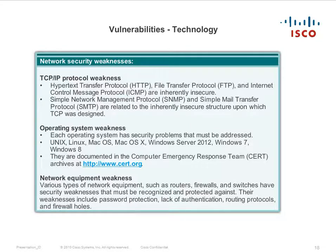Vulnerabilities in the technology area — network security weaknesses: TCP/IP protocol weaknesses include HTTP, FTP, and ICMP, which are inherently insecure. SNMP and SMTP are related to the inherently insecure structure upon which TCP was designed. Operating system weaknesses: each operating system has security problems that must be addressed, including Unix, Linux, Mac OS, Mac OS X, Windows Server 2012, Windows 7, and Windows 8. These are documented by the Computer Emergency Response Team (CERT) on their website.